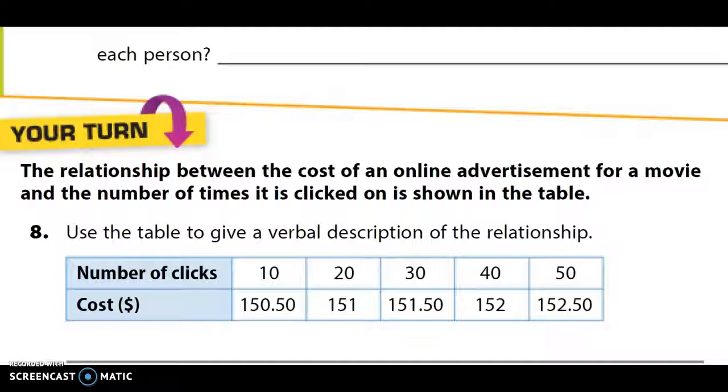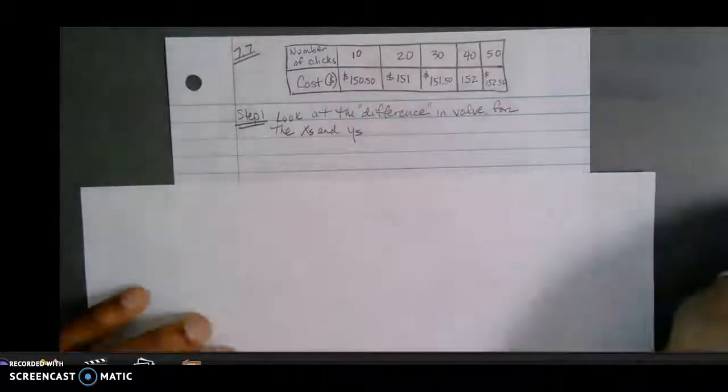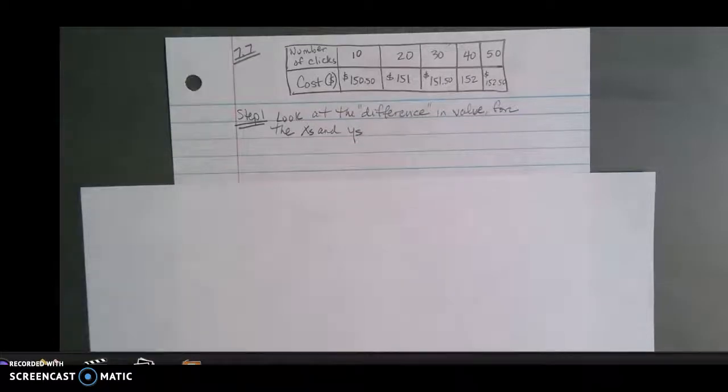So again, we look and we see that the number of clicks is going up. It appears to be by how much? Look and see if you see a pattern there. What is happening as the number of clicks increases? Or how much is it increasing by, I should say. The cost, we can also look to see what's happening here. So as I see, there appears to be something that's going on, but let's explore that a little bit more. All right, so we're going to take a look at what we have here. What I've done is I've recreated the chart from the previous page.